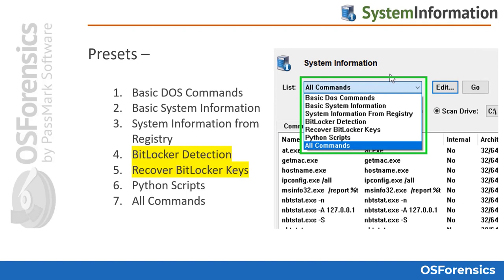The BitLocker detection scan will scan all mounted devices on the local system for the presence of any that may be encrypted with Windows BitLocker. This is useful for those processing a live machine with an OS Forensics USB, as you can determine whether or not the system drive or any attachments are encrypted with BitLocker.